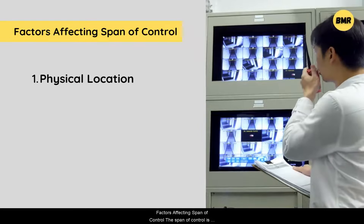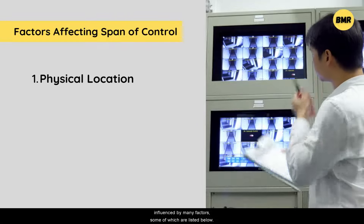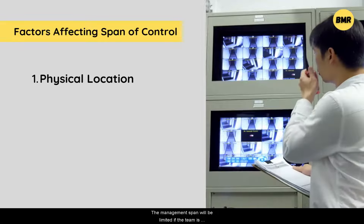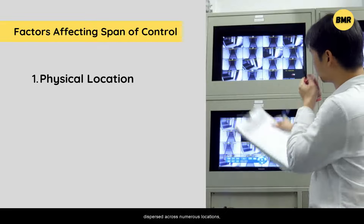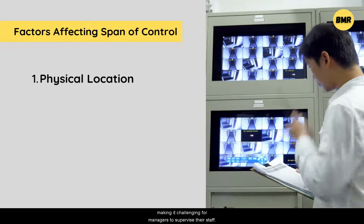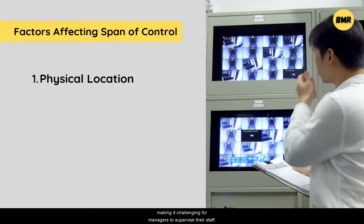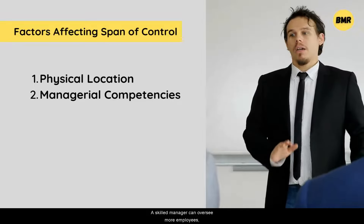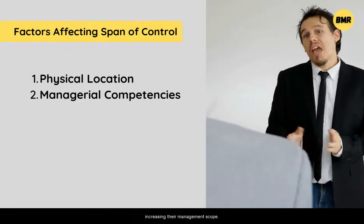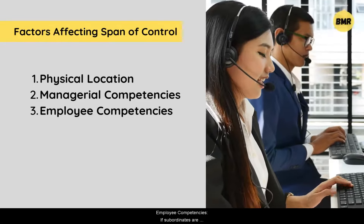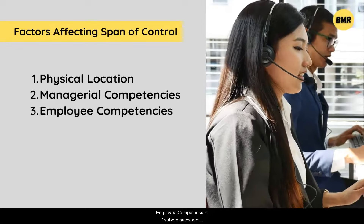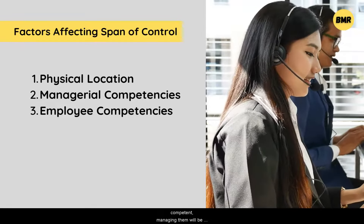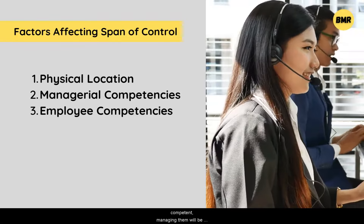There are certain factors affecting span of control. The first factor is physical location — the management span will be limited if the team is dispersed across numerous locations, making it challenging for managers to supervise their staff. Number two, managerial competencies: a skilled manager can oversee more employees, increasing their management scope. Number three, employee competencies: if subordinates are competent, managing them will be simpler because they won't need as much supervision, and consequently managers will have a wider range of control.